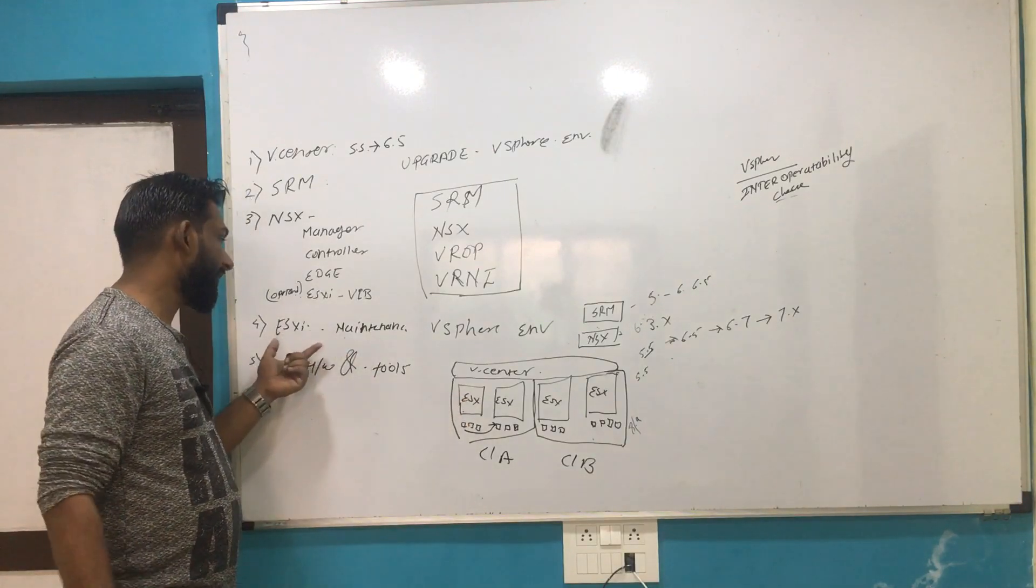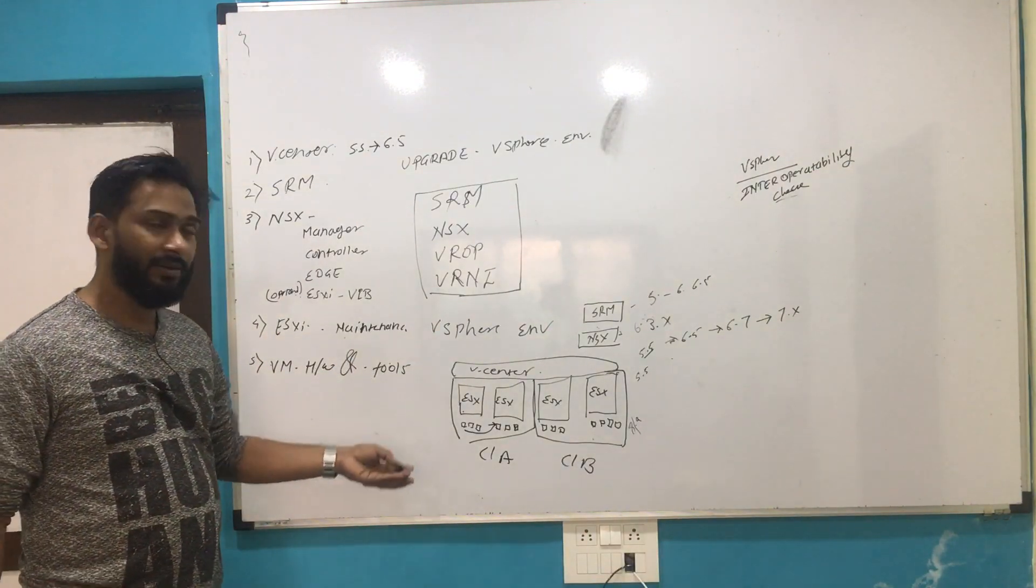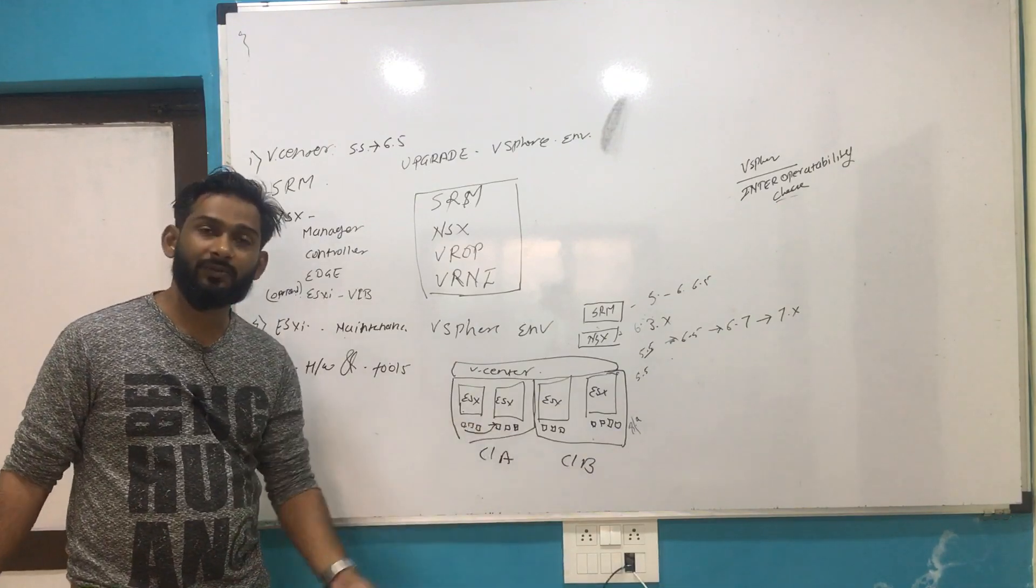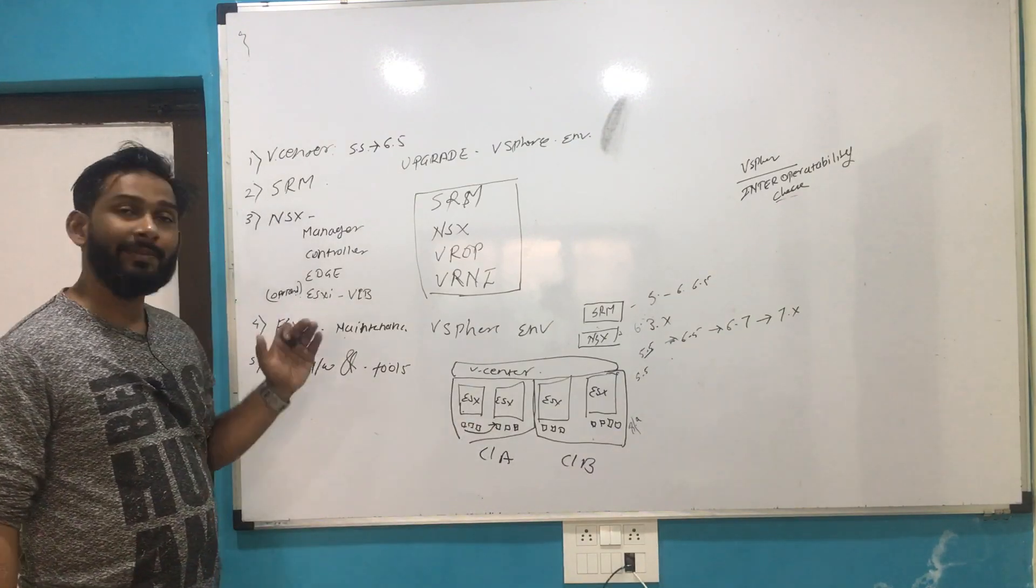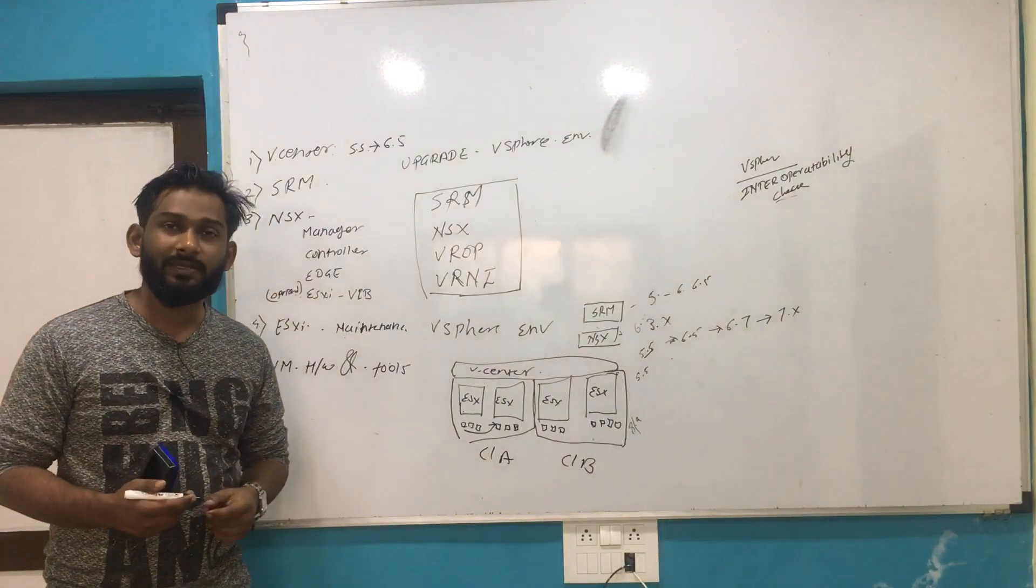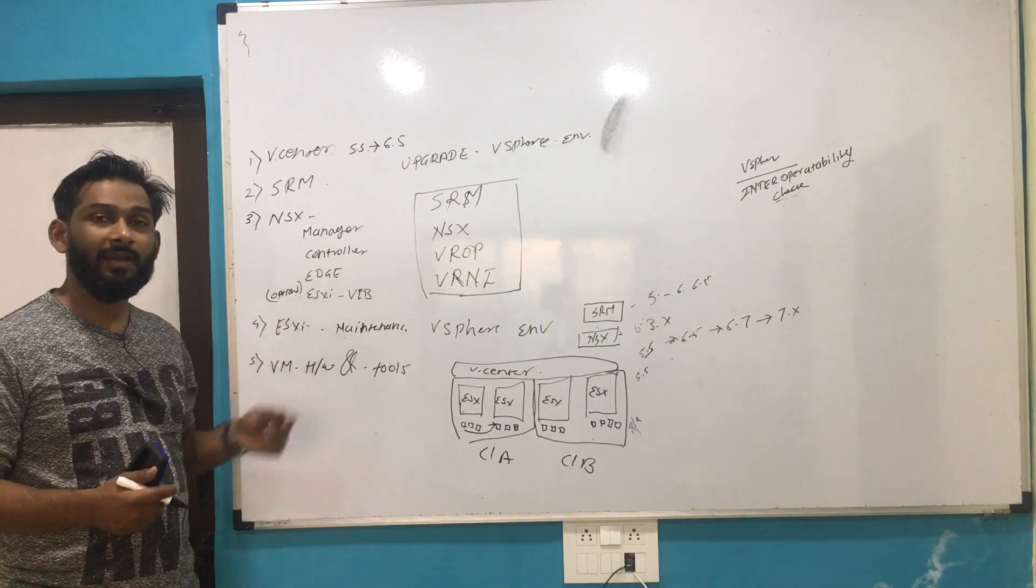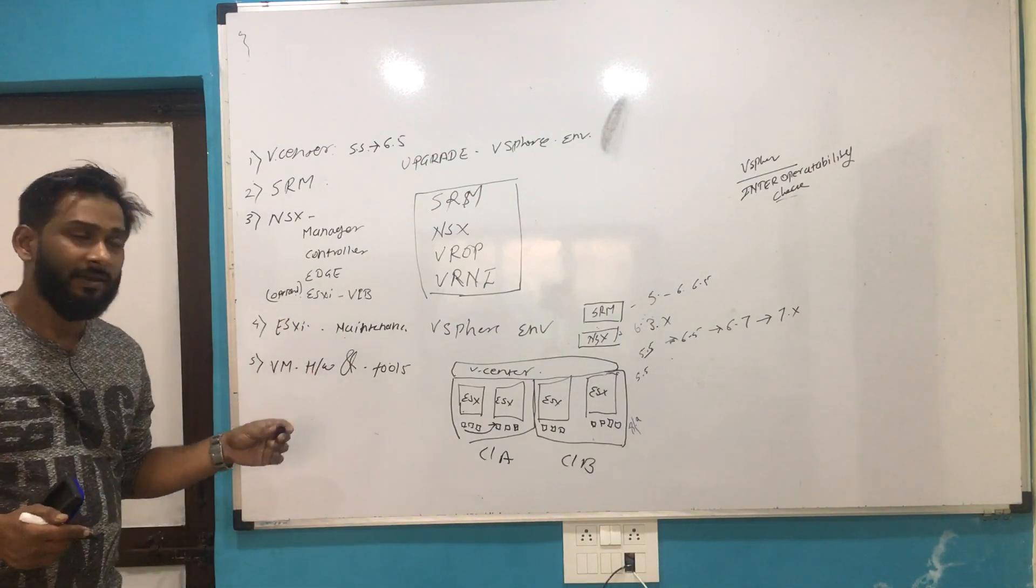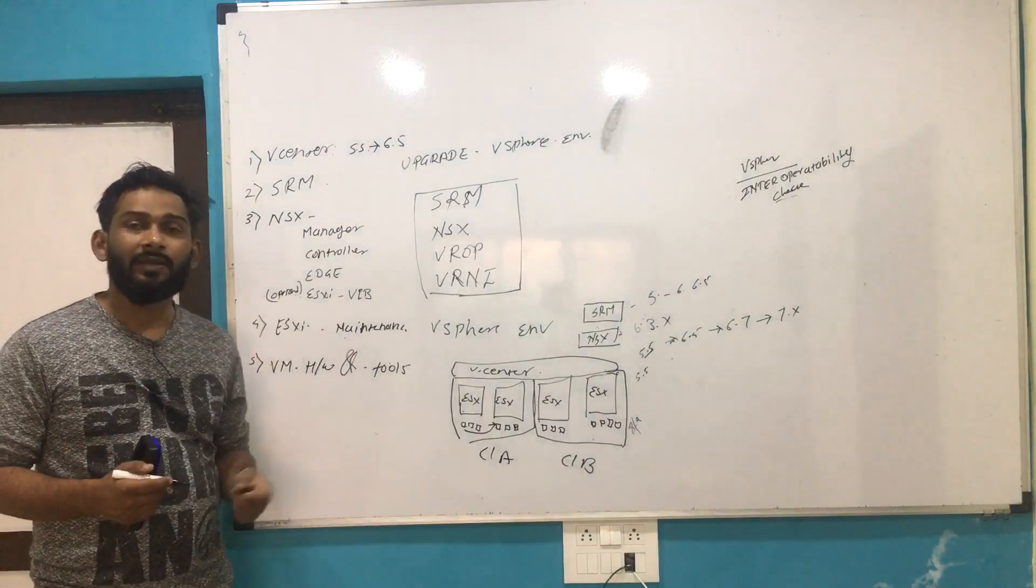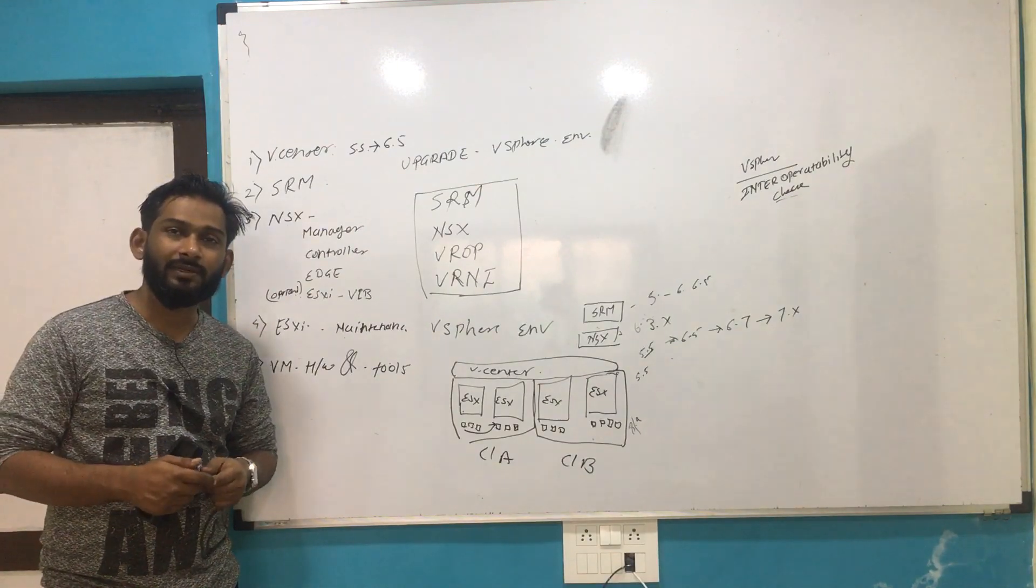If you have properly implemented DRS and HA, HA is also not needed, but if DRS is implemented, VMs should be migrated to another host without any application downtime. This activity or upgrade activity can be completed. This was the overall approach or high-level project planning for the vSphere upgrade plan. If you have any questions, put that in comments. I'll try to answer, or you can reach out to me on LinkedIn.